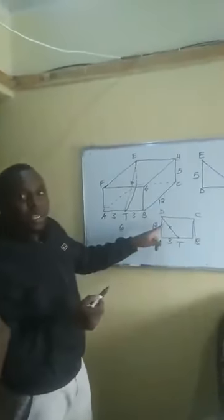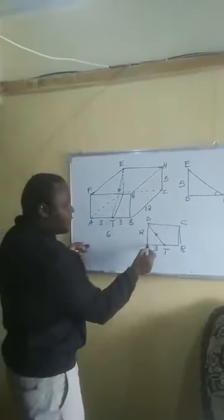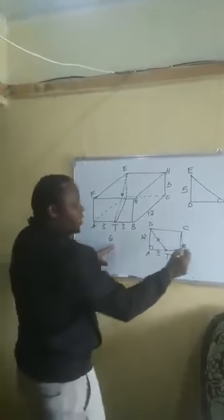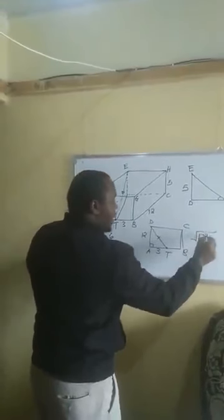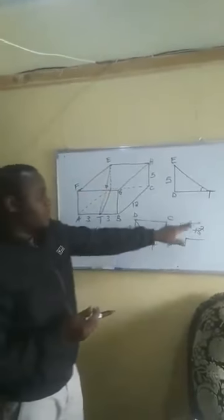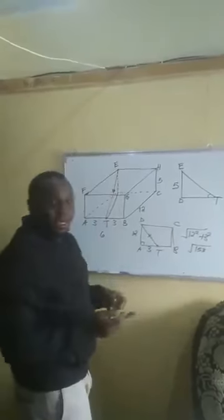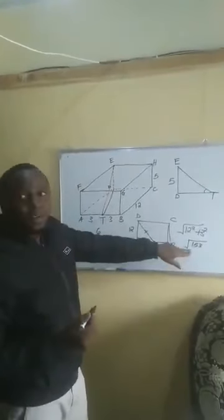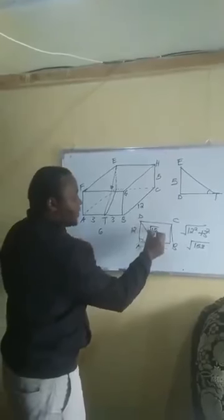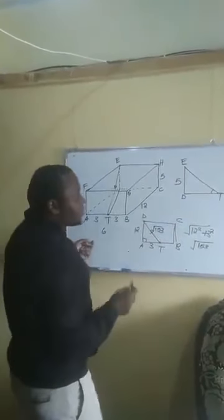The line TD happens to be the hypotenuse of triangle DAT. Since the angle at A is 90 degrees, it is a right-angled triangle. We get the hypotenuse: square root of 12 squared plus 3 squared = square root of 144 + 9 = square root of 153. Since this is not the final answer, we keep DT as √153.